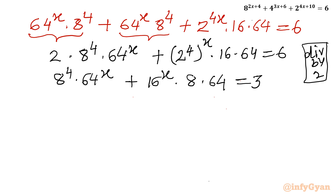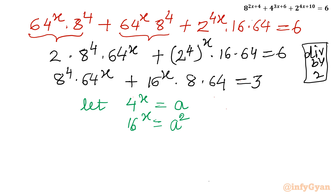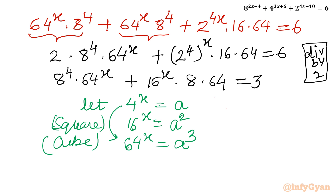Now it is better to use substitution. Let 4^x = a. Taking squares of both sides: 16^x = a^2. Taking cubes of both sides: 64^x = a^3. So we can replace these in our equation.